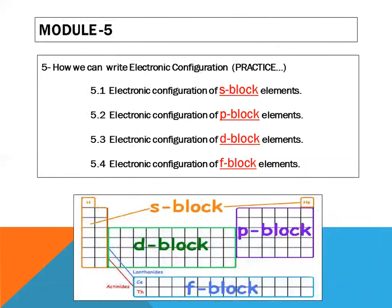In final module, that is module number five, this module is about how we can write electronic configuration. It is a practice module in which we are explaining electronic configuration of S block element, electronic configuration of P block element and electronic configuration of D block and F block element.